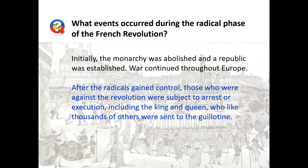After radicals gained control of the government, those who were against the Revolution — even those perceived to be against it — were likely to be arrested, and many of those were subsequently executed, including Louis XVI and his wife, Marie Antoinette. Thousands of those who were arrested were sent to their death via the guillotine.